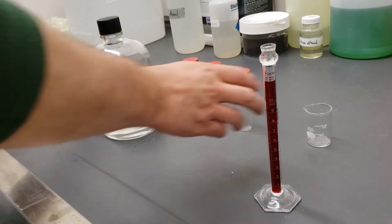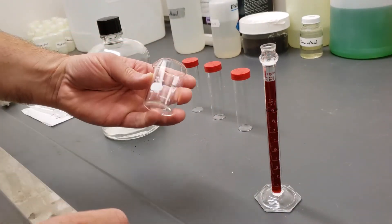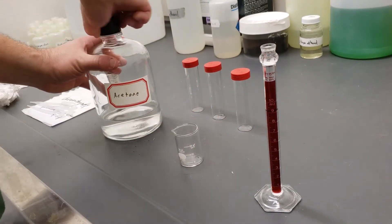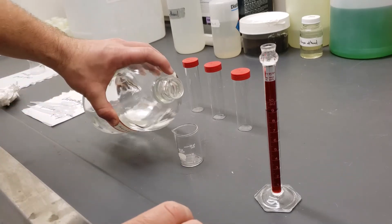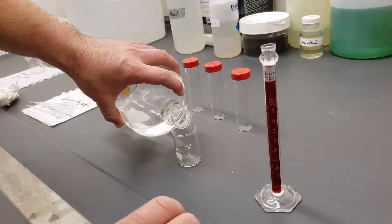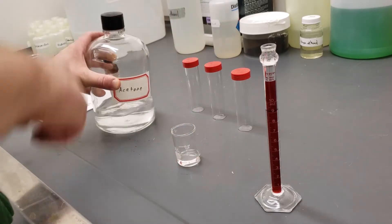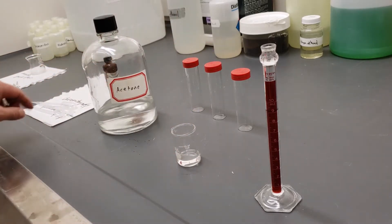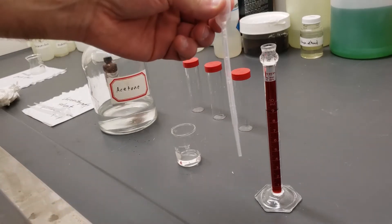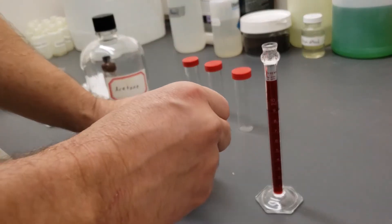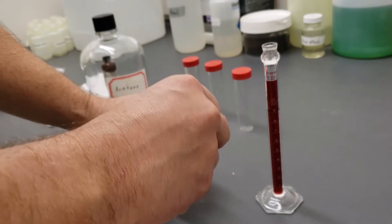I need to get some of this acetone out of here. I'm going to use this little beaker to transfer some acetone. Just need a little bit, one mil. I'm going to use my one mil pipette. Let's take out one mil here, approximately.